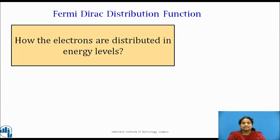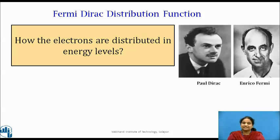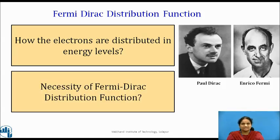Hence, the statistical distribution function that is applicable to quantum particles is the Fermi-Dirac distribution function. This function is named after Enrico Fermi and Paul Dirac, each of whom discovered the method independently. Before knowing what this distribution function is, let's first know the necessity of this function.